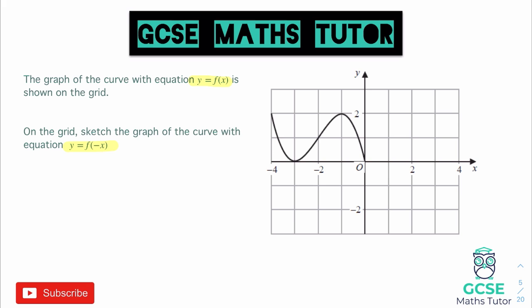When something's happening inside the bracket, normally it does the opposite of what we'd expect. For example, something like y equals f of x plus 2 — we would expect that to add 2 to all the x values, but actually it does the opposite and takes away 2 from the x values. If you subtract 2 from the x values, it actually translates it to the left. So x plus 2 in the bracket moves the graph to the left, and likewise x minus 2 would move the graph to the right.